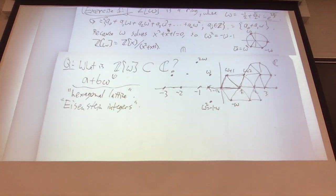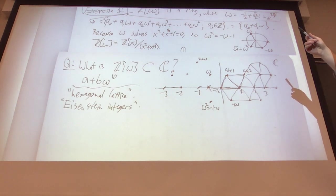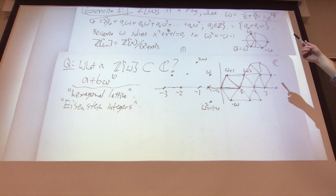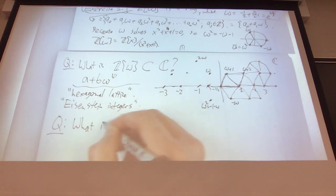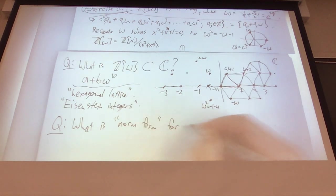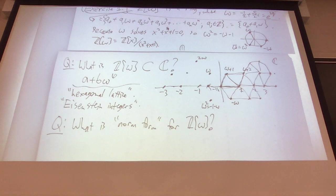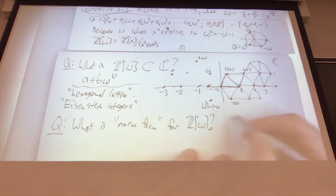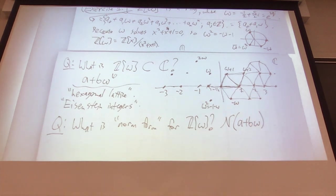We're going backwards in motivation. We had worked out the Gaussian integer theory because we were interested in values of the quadratic form x squared plus y squared, which was the norm form in the Gaussian integers. So the main question now: what is the norm form for the Eisenstein integers?